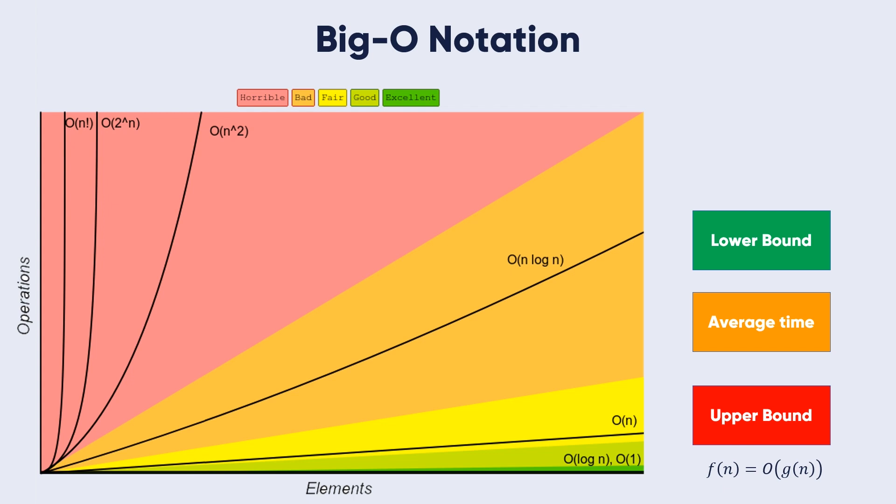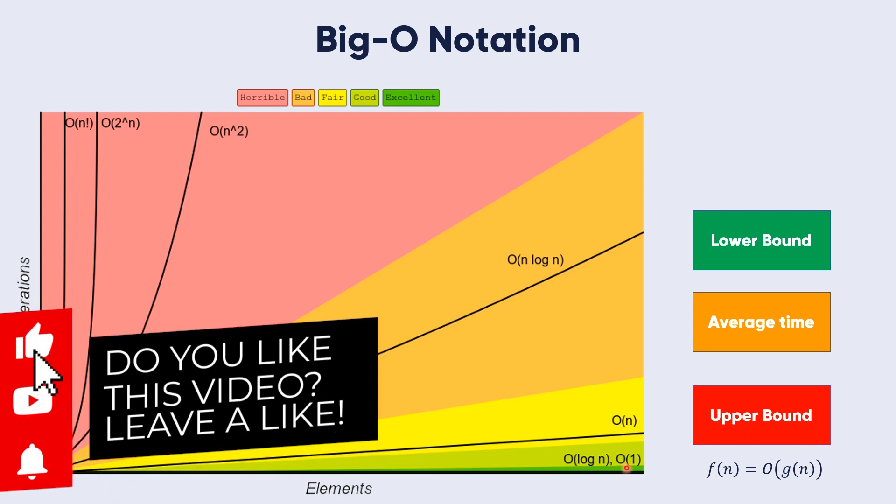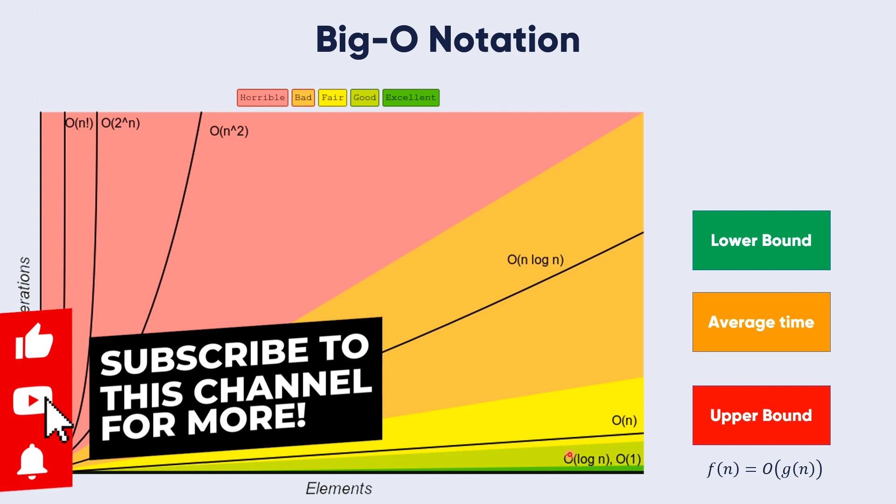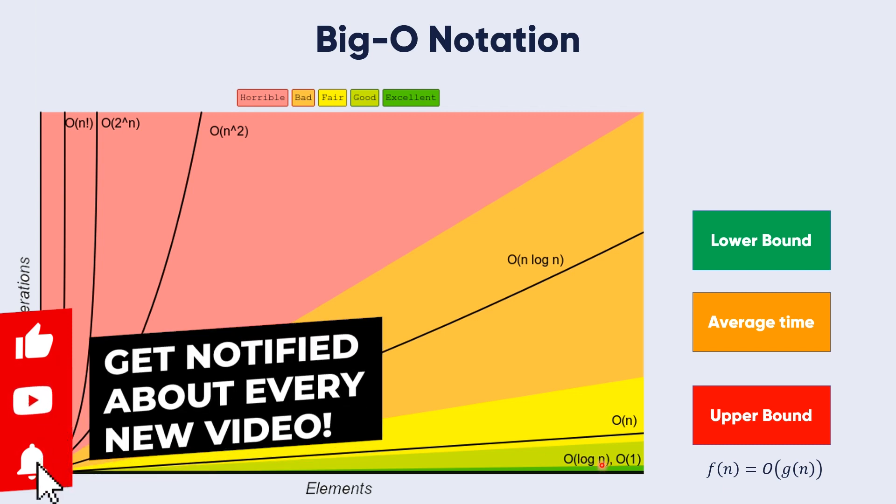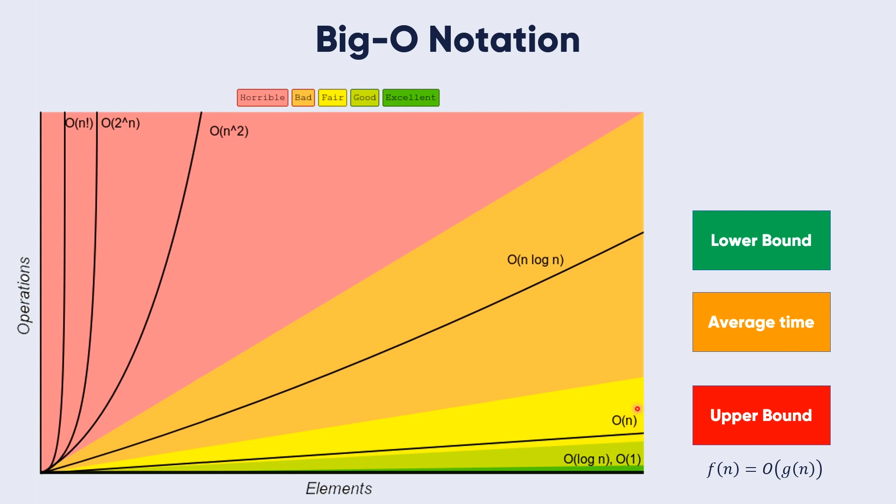I need you to take a quick look at this lower bound, average time and upper bound and these algorithm times. We start with O(2^n), O(1) and O(log n). This is the green O(1), this is the greenish log n, this is the yellow O(n).